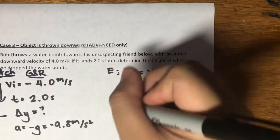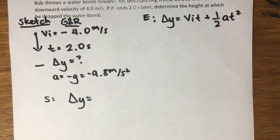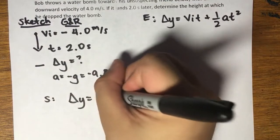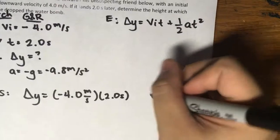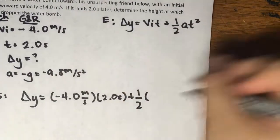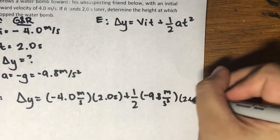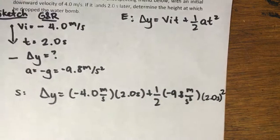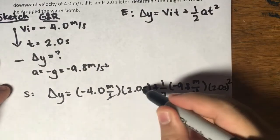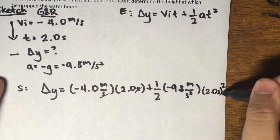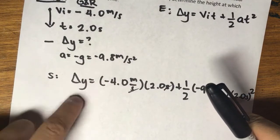So for our solution: delta y is equal to... vi is negative 4.0 meters per second, time is 2.0 seconds, plus one-half times a, which is negative 9.8 meters per second squared, times time — 2.0 seconds — squared. Don't forget the square at the end; some people forget that when using kinematic equations. Let's check units: in the first term the seconds cancel, and in the second term seconds squared cancels with seconds squared, giving meters. Meter plus meter gives meters, which is consistent with delta y.